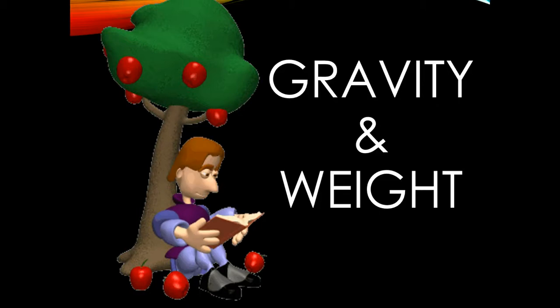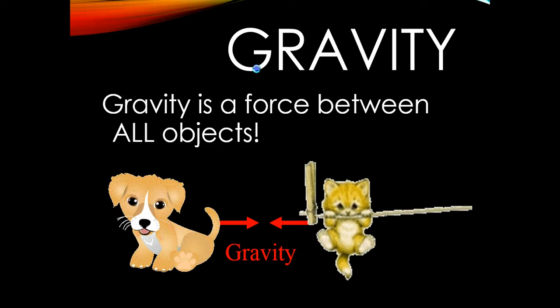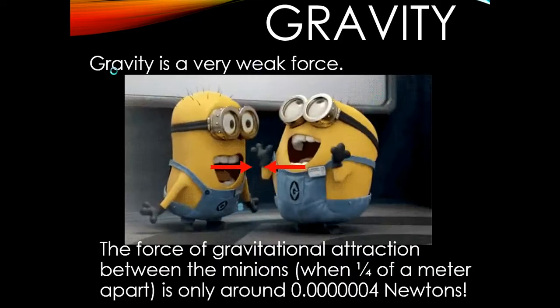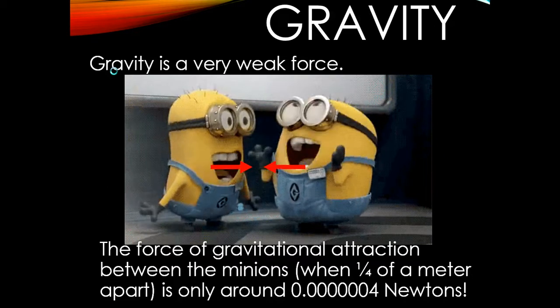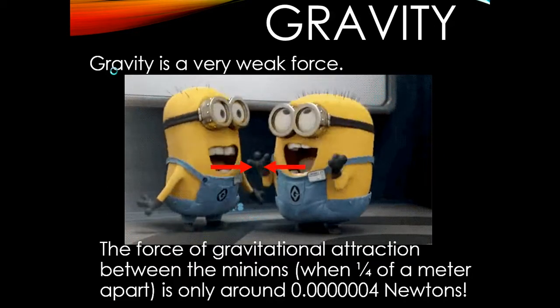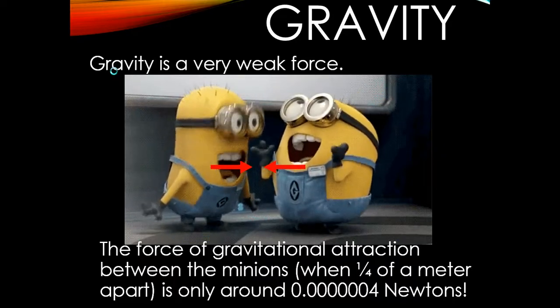We're going to start talking about gravity and weight for our second section of Newton's Law. Gravity is the force between all objects on Earth. Gravity is a very weak force. If you look at the two minions, the force of gravitational attraction between them, if they're a quarter of a meter apart, is only around 0.0000004 newtons.